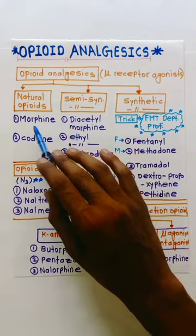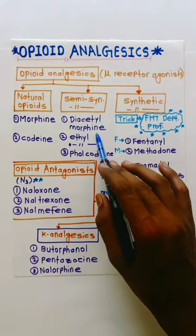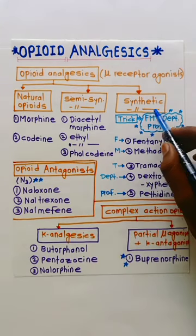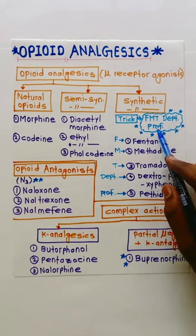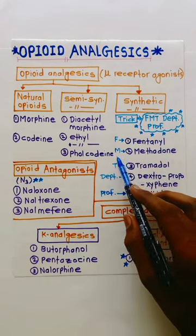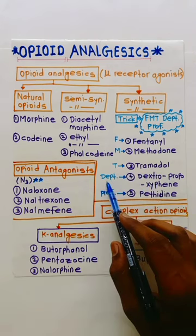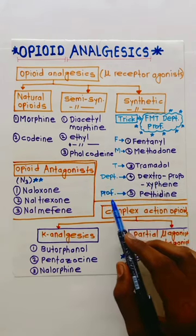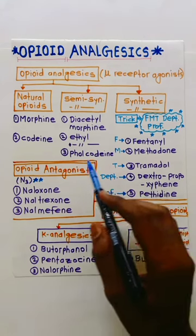these are the derivatives of natural opioids: diacetylmorphine, ethylmorphine, and pholcodeine. In synthetic opioids, we have a trick — the mnemonic TFMT: Department Professor. F for fentanyl, M for methadone, T for tramadol, Department for dextropropoxyphene, Professor for pethidine.